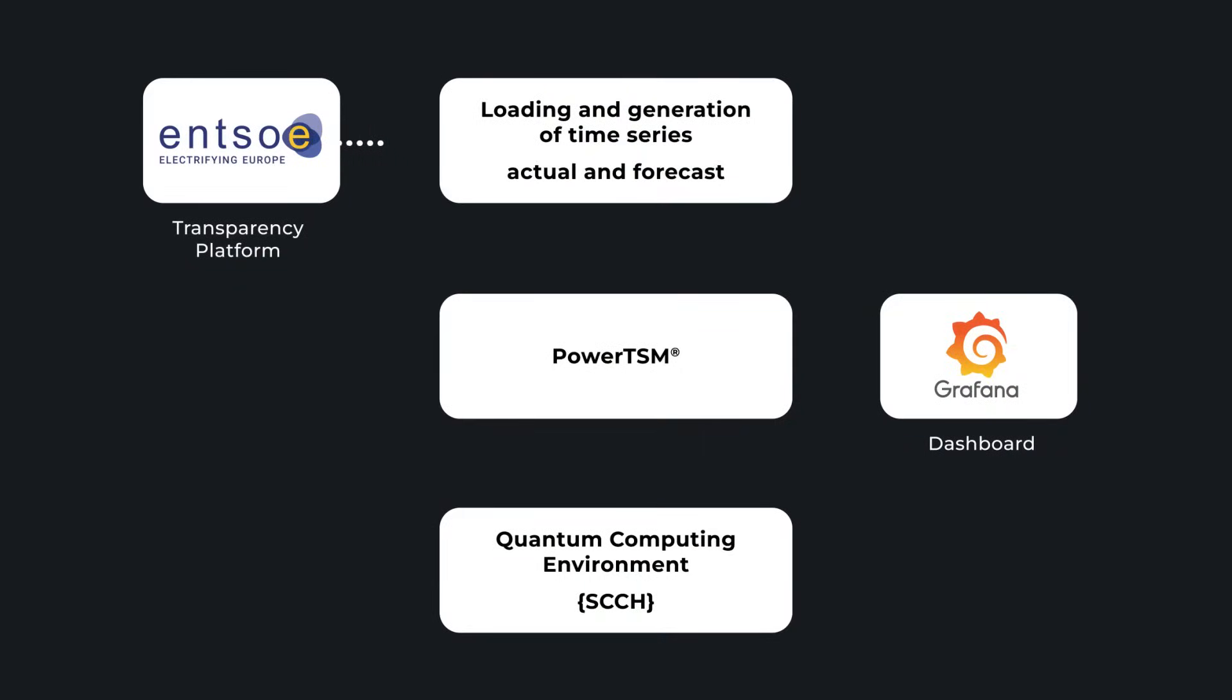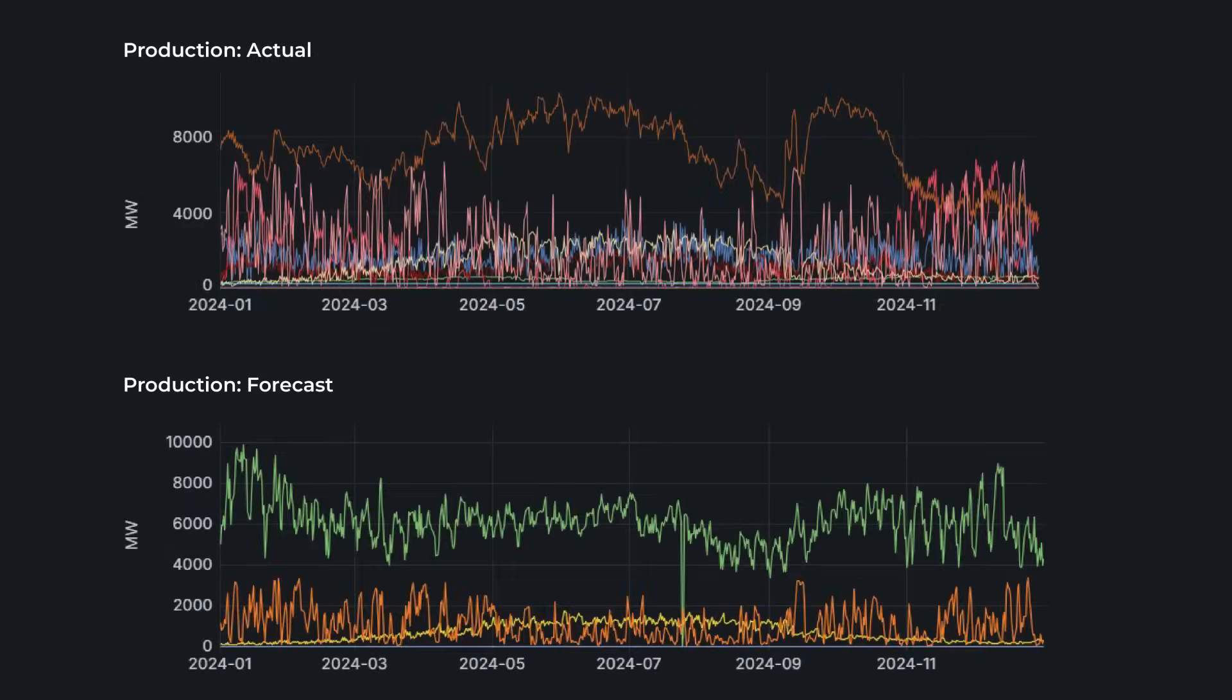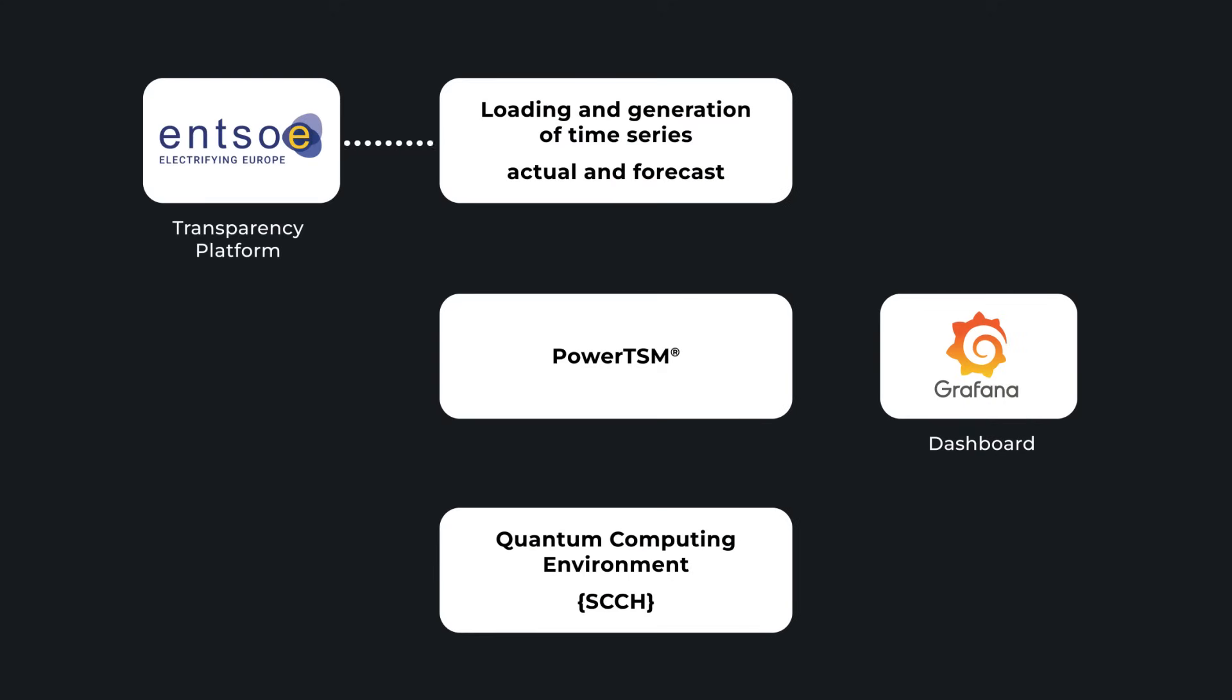So now let's have a look at the optimization problem. As a prerequisite, we obviously need the data. And therefore, we connected our partisan platform to the ENTSOE transparency platform. There we get some data, the actuals and the forecasts for consumption and production. We validate all this data, we ingest it, and then make it available for the optimization.